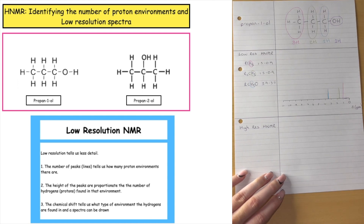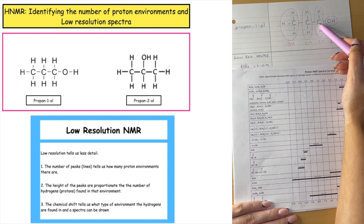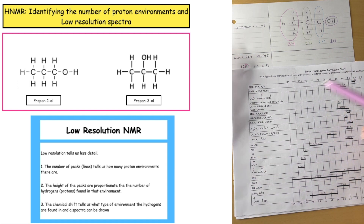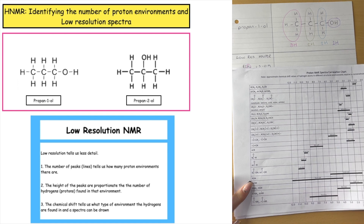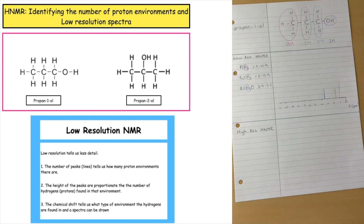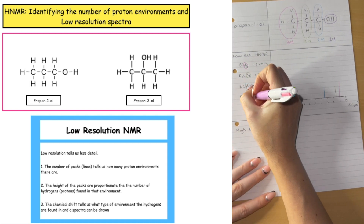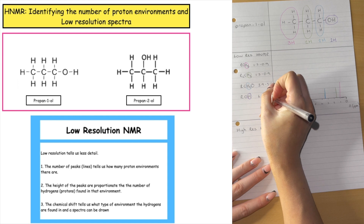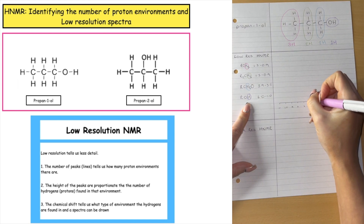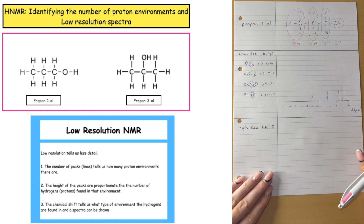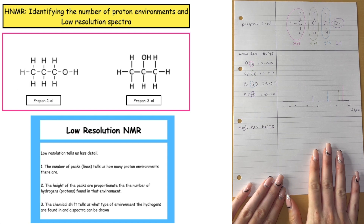The last hydrogen environment is the one bonded as part of the hydroxyl group. The H is bonded to an O bonded to an R, so reading left to right: ROH. At the bottom of the data booklet, ROH has a large chemical shift range of 6 to 1. I highlight that hydrogen and plot it at 6.0 at a height of 1, since there is only one hydrogen in that environment. This completes the identification and plotting for propane-1-ol.